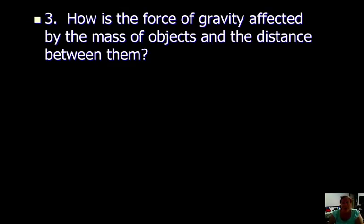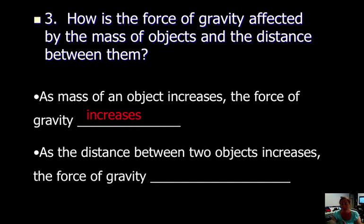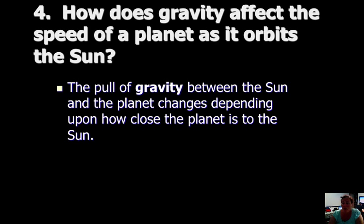How is the force of gravity affected by the mass of objects and the distance between them? The force of gravity increases the more mass an object has, so the larger the object, the more gravity it will have. The Sun has immense gravity compared to the planets, though the Moon has a stronger gravitational effect on Earth because it's so much closer. As distance between objects increases, the force of gravity decreases. So gravity changes depending on how close the object is in its orbit.